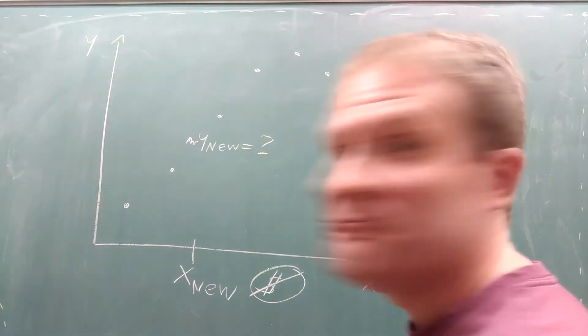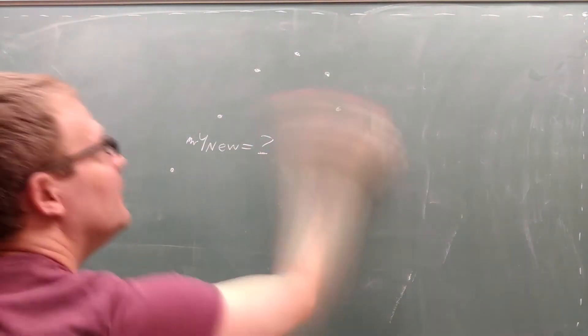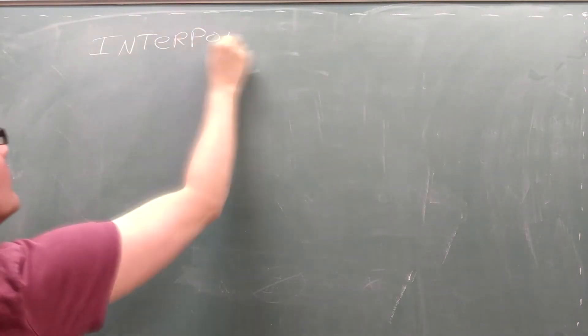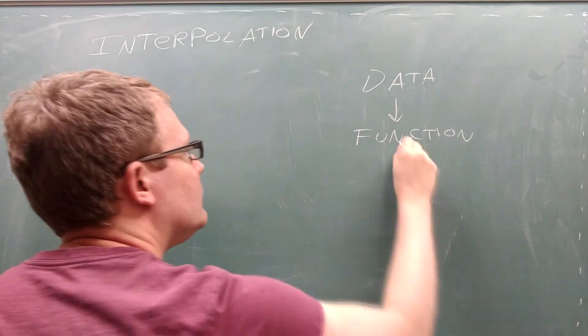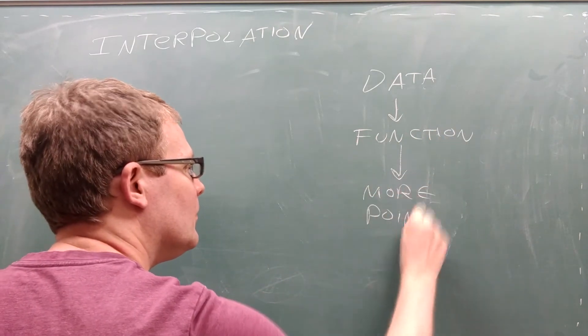You could try eyeballing it, but there's a better way, using a process called interpolation. When you interpolate a data set, you create a function based on the data you've collected, then use that function to estimate additional data points.